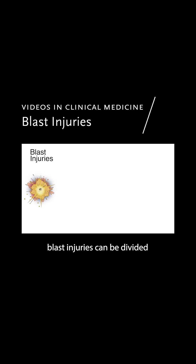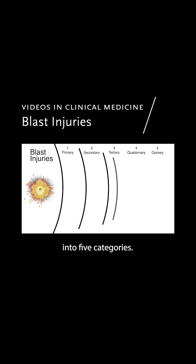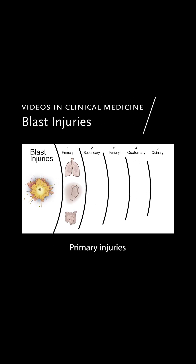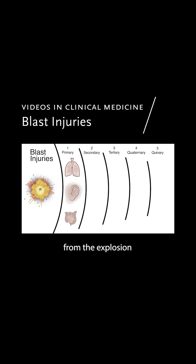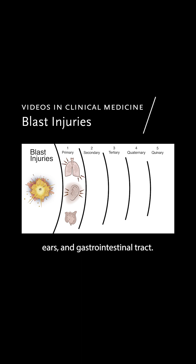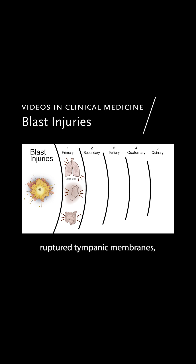The spectrum of blast injuries can be divided into five categories. Primary injuries are caused by the high-pressure blast wave from the explosion, primarily affecting the lungs, ears, and gastrointestinal tract. Injuries include blast lung, ruptured tympanic membranes, and bowel perforations.